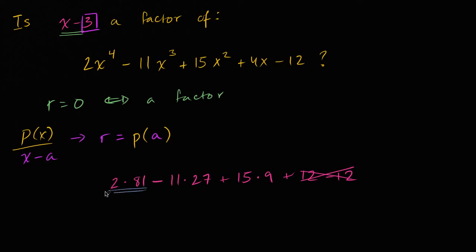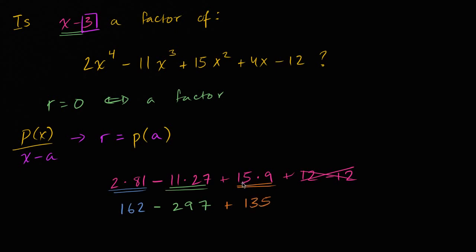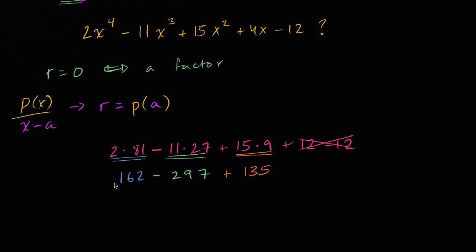So lucky for us, at least those last two terms cancel out. The rest from here is arithmetic. Two times 81 is 162. Now let's think about what 27 times 11 is. 27 times 10 is 270, plus another 27 is 297. So that's minus 297. And then 15 times 9: 90 plus 45 is 135, so plus 135. If I take 162 and 135, that gives me 297, minus 297. And we do indeed equal zero.